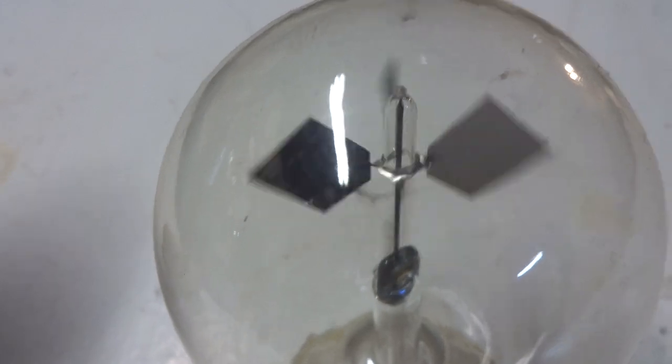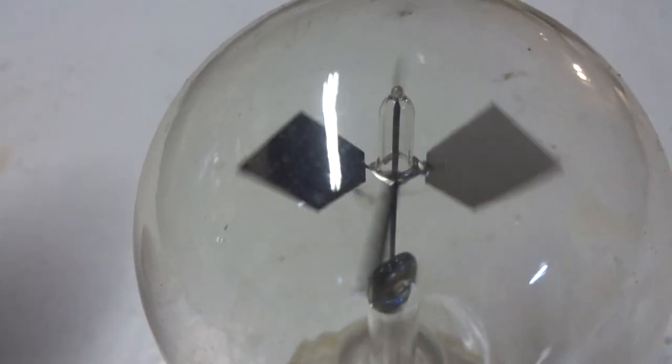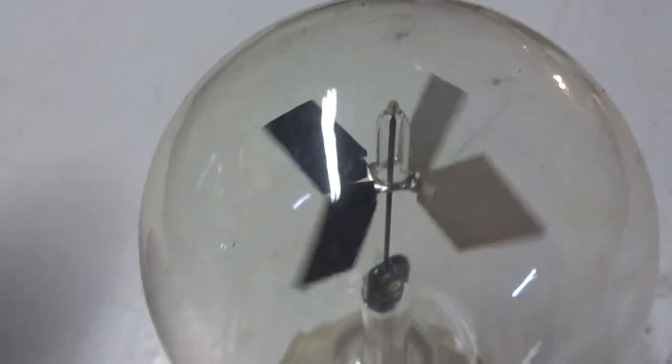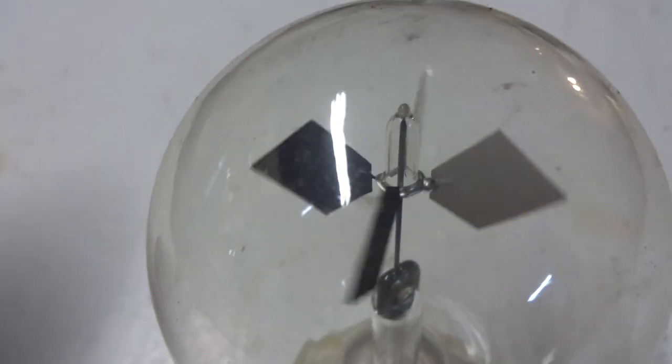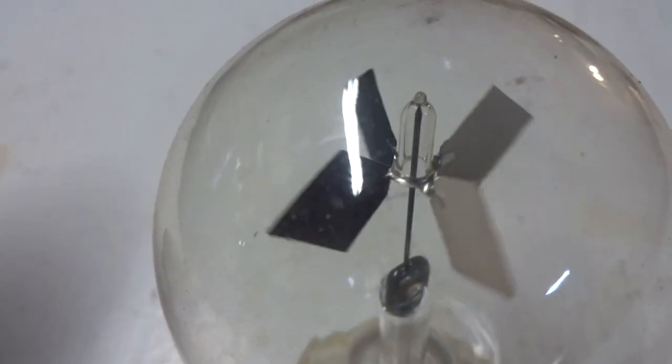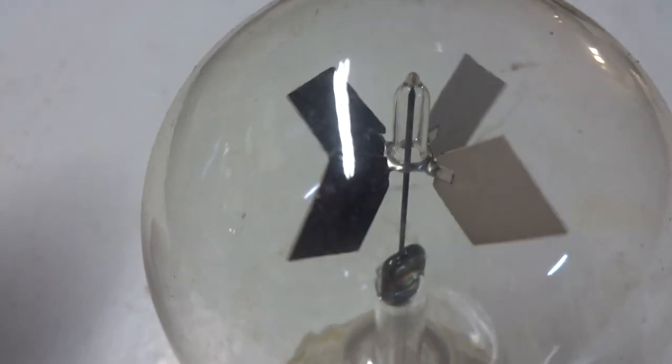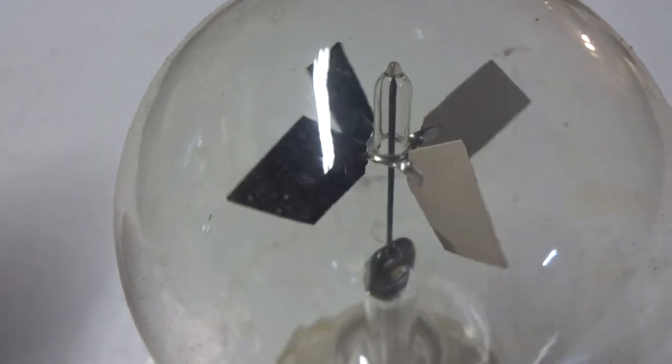You can buy radiometers at Scientific Direct, Carolina Biological, Edmund Scientific, and other science catalogs. Simply type radiometer on Google, and you will find websites that sell them.